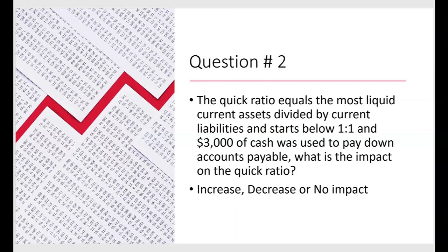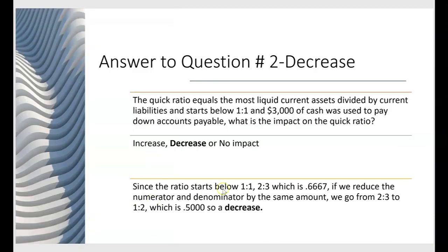Since the ratio starts below one to one, let's say it starts at two to three — two dollars of most liquid current assets for every three dollars of current liabilities, which works out to 0.667. If we reduce the numerator and denominator by the same amount — take one away from both — we go from two to three down to one to two. We went from 0.667 to 0.5: that's a decrease in the ratio. How much auditing was involved? None. How much accounting? Very little. It's all math.